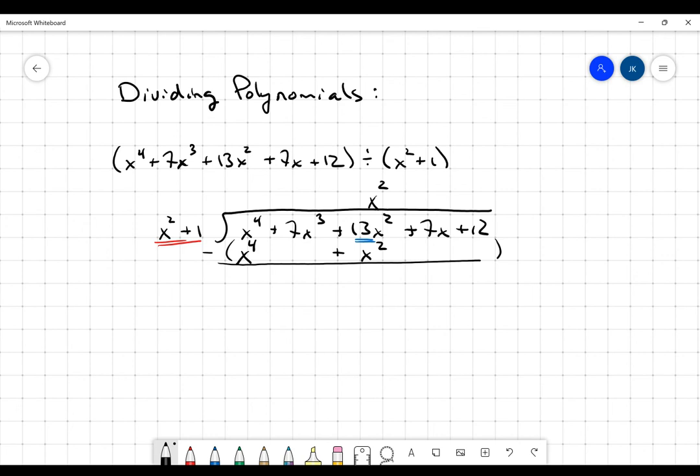And then I get 7x cubed minus 0 is 7x cubed. 13x squared minus x squared is going to be 12x squared. And then 7x minus 0 is 7x. 12 minus 0 is 12.